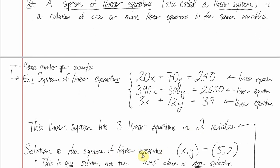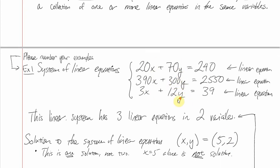We saw yesterday that there is a solution to this system: the point (5, 2). This is considered one solution, not two. x = 5 alone is not a solution; you need x = 5 and y = 2 simultaneously. That means using the same value of x in all three equations and the same value of y in all three, satisfying all three equations at the same time.